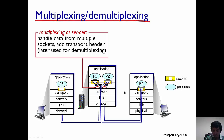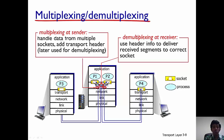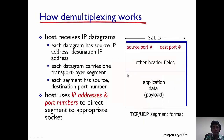There is also demultiplexing happening at the server. Once data is sent from processes P4 and P3 and reaches the server, it has to be demultiplexed. Header information is used to demultiplex data coming from different processes and send it to the correct socket.